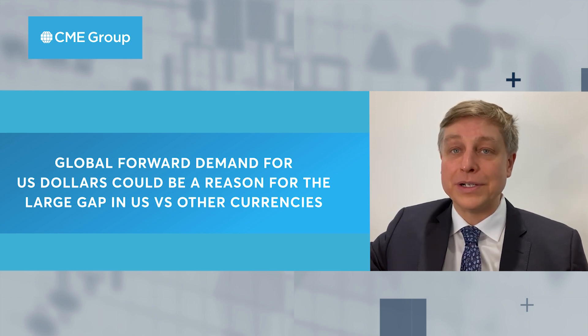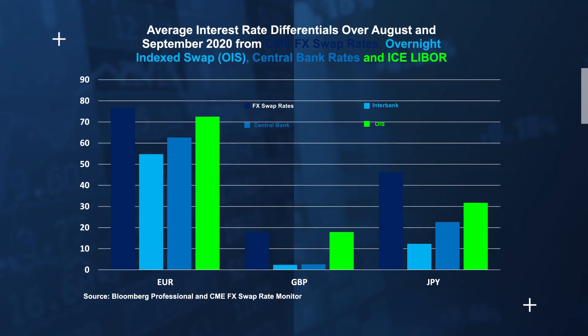What's curious is that when these ways of measuring interest rate differentials are compared, the currency market measure consistently showed a larger interest rate gap between the US rate and the foreign currency rate than did the central bank rates or the OIS. In other words, US interest rates appeared higher relative to other countries when observed in the currency market than when seen from the perspective of the interest rate market. This was true across seven different currencies on CME's FX swap rate monitor, measured over August and September, with some gaps as big as 20 or 30 basis points.